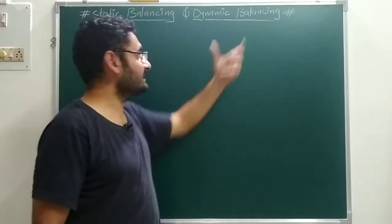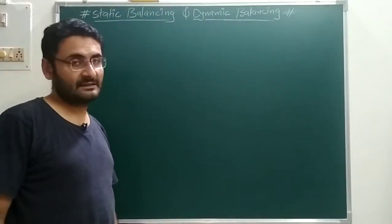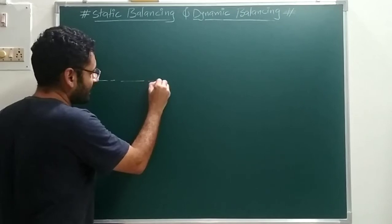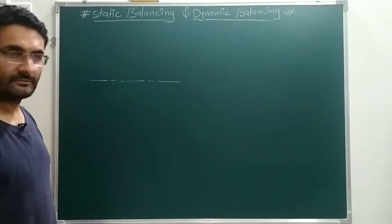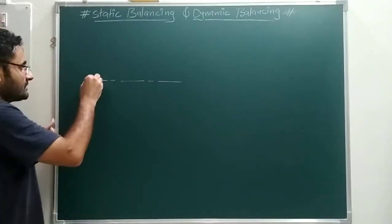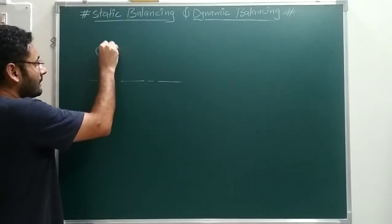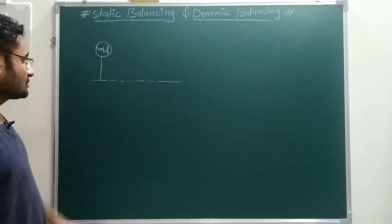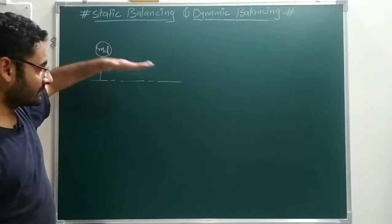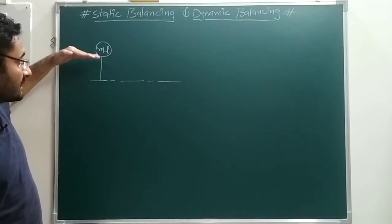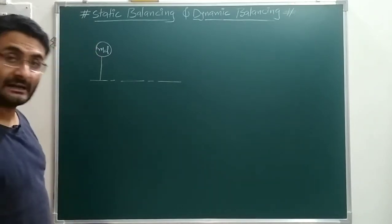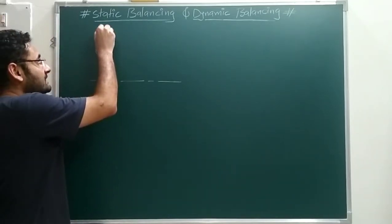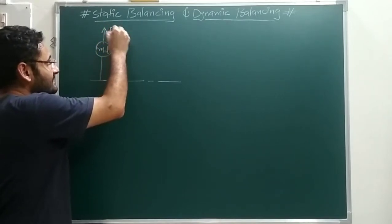In both terms, balancing is common, so we will understand the meaning of balancing first. I will draw one axis of the shaft — the axis of rotation — about which the shaft will rotate. On this shaft we will consider one disturbing mass Md (d means disturbing, m means mass). When that system rotates, due to this disturbing mass some disturbing force — or unbalanced force — is created.